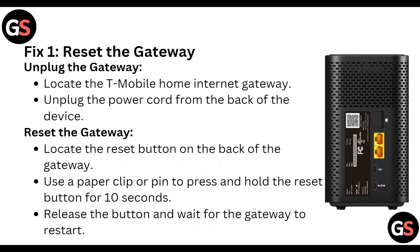Fix one: Reset the gateway. Unplug the gateway — locate the T-Mobile Home Internet gateway and unplug the power cord from the back of the device. Then locate the reset button on the back of the gateway and use a paper clip or pin to press and hold it.